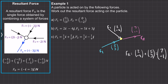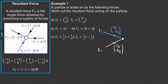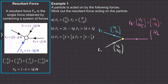Now try question c — pause the video and we'll go through the worked solution. In question c, F1 = (1/3)i + (2/5)j and F2 = (1/2)i − (1/4)j. Adding them: the i components give 1/3 + 1/2 = 5/6, and the j components give 2/5 − 1/4 = 3/20. So FR = (5/6)i + (3/20)j.